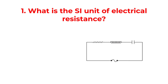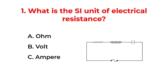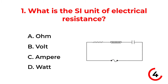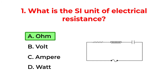What is the SI unit of electrical resistance? A. Ohm. B. Volt. C. Ampere. D. Watt. The correct answer is option A: Ohm.